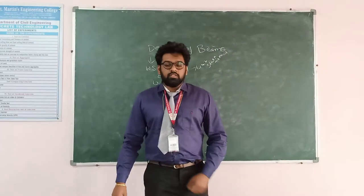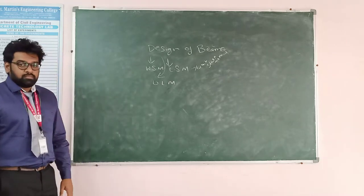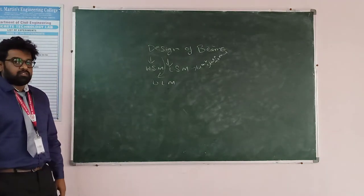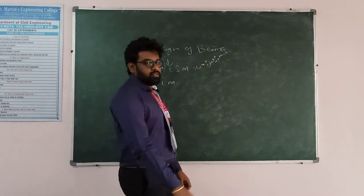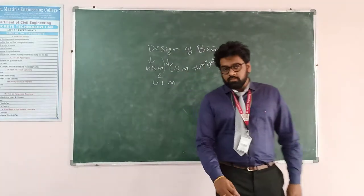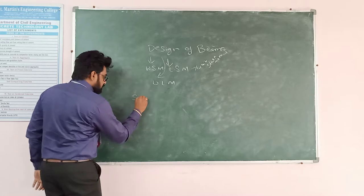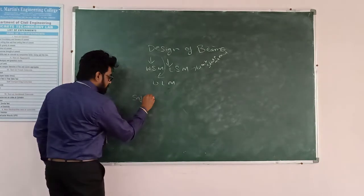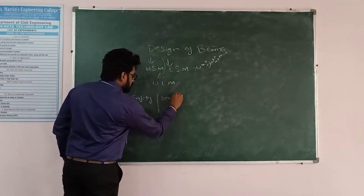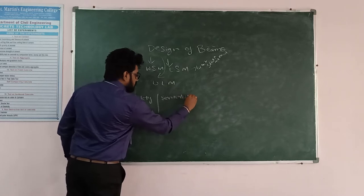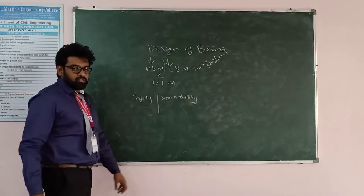What is meant by Limit State? Limit is the acceptable limit of safety and serviceability of the structure before failure. That is known as the Limit State. There are two criteria: first one is Safety, and the second one is Serviceability.